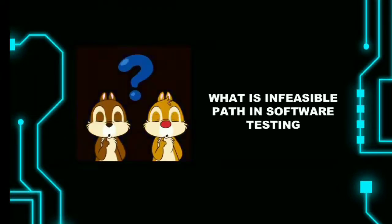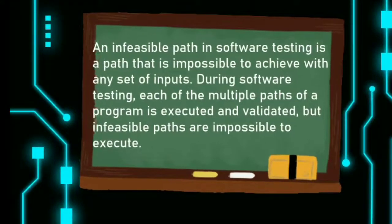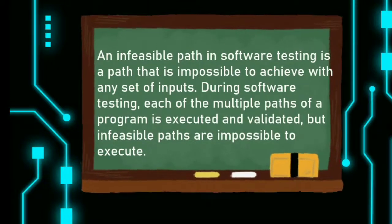Before seeing the example of symbolic execution, we have to know what is an infeasible path in software testing. An infeasible path in software testing is a path that is impossible to achieve with any set of inputs. During software testing, each of the multiple paths of a program is executed and validated, but infeasible paths are impossible to execute.